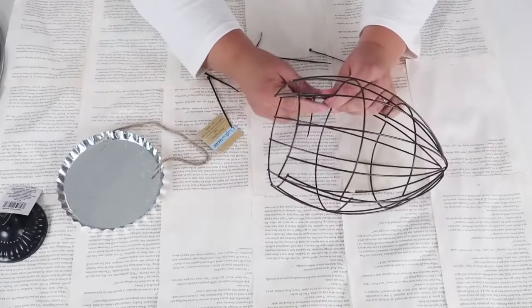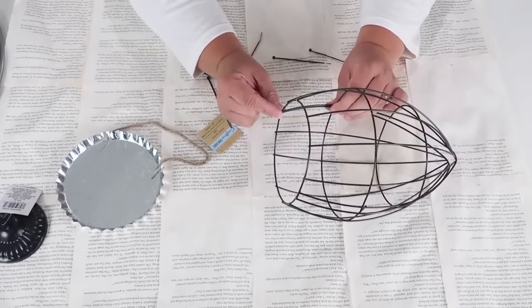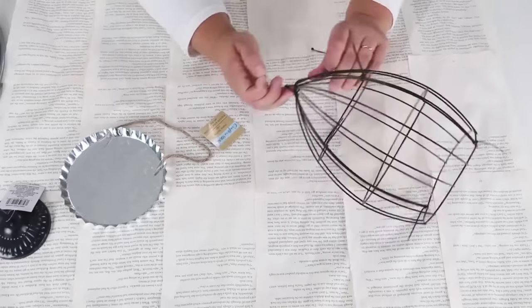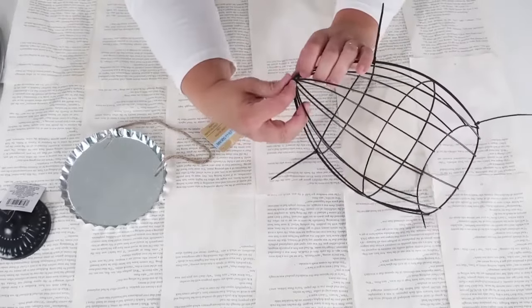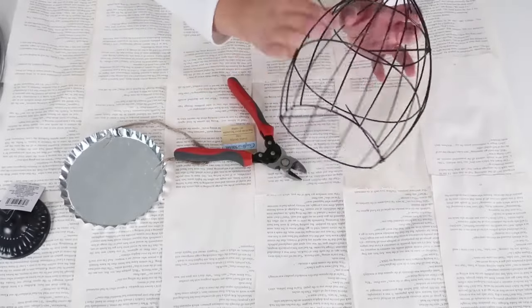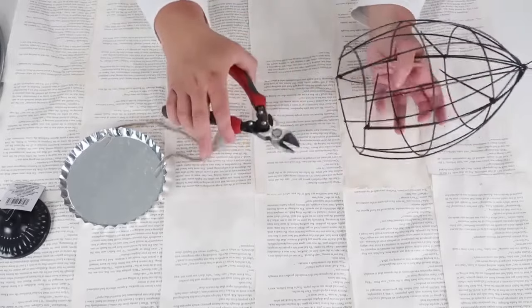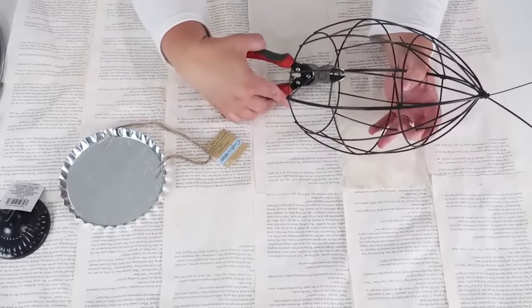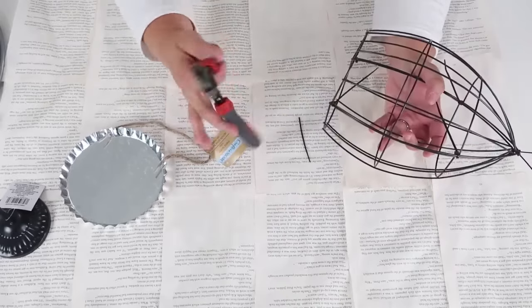We're going to start zip tying these together to create a cage. This is the easiest project, and it has such a beautiful farmhouse high-end look. Go ahead by zipping the sides at the bottom and the middle, and then two at the top. And I like to turn the zip ties in and snip off the extra that way so it cleans it up and it looks really nice.